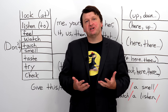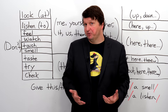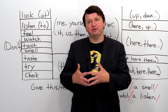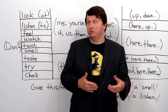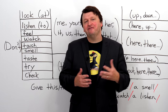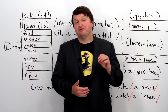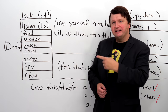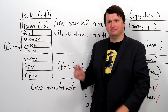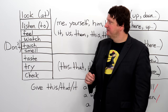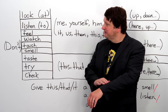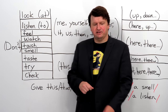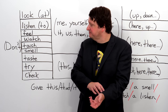I hope this video has helped you improve your English, expand your vocabulary, and see the range of sensory verbs you can use to give imperatives — to ask people to sample things, try things, look at this, look at that, check this out. These are all very useful, very common imperatives. Let's say a couple of them one more time so you can repeat after me: look at this, listen to that, feel this, watch this, touch here.